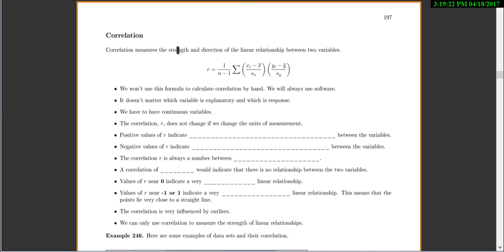So correlation measures both the strength and direction of the linear relationship between two variables. This is your formula. You can look at this later. We're never going to do this by hand in my class. I don't like to make you do it by hand. We just use software.